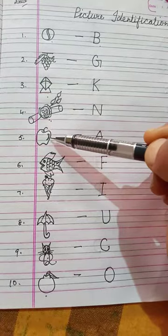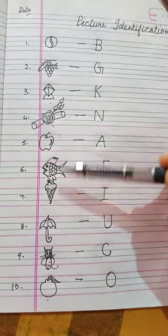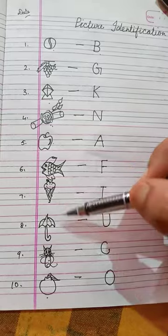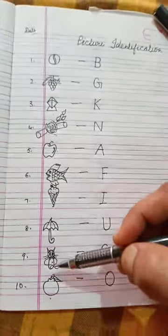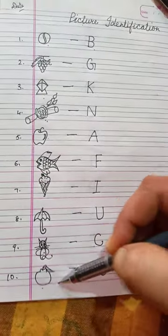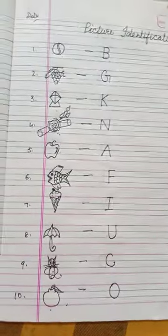Okay children, write it at your home. Thank you. I for ice cream, U for umbrella, C for cat, and O for orange. Write it at your home, thank you.